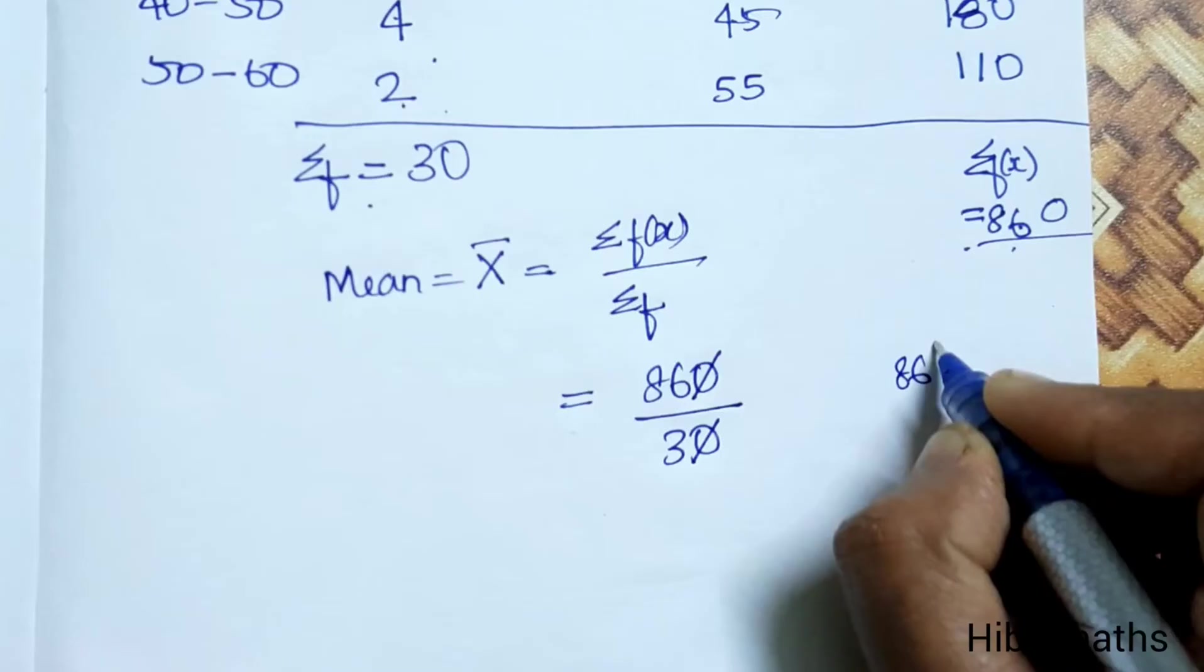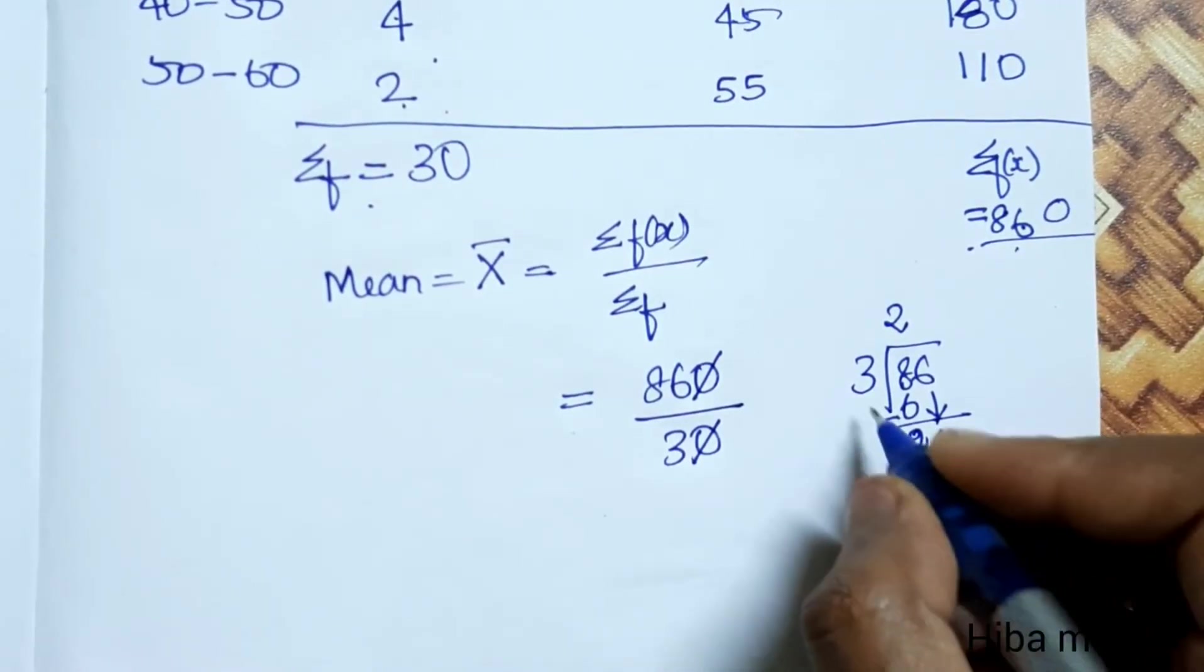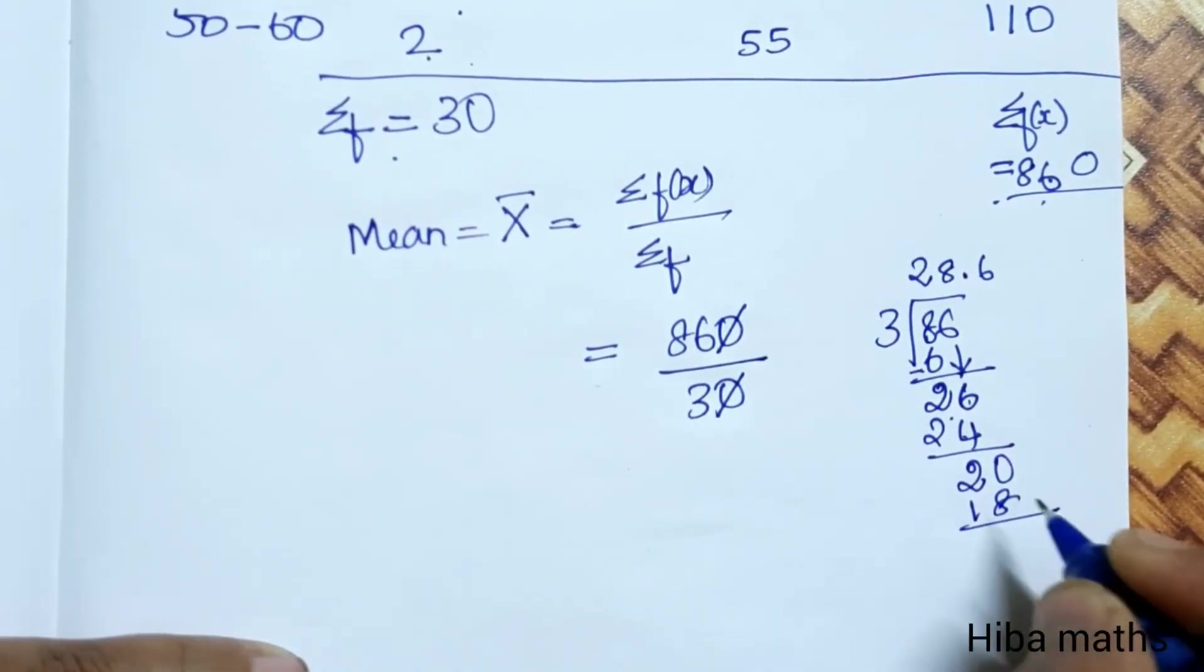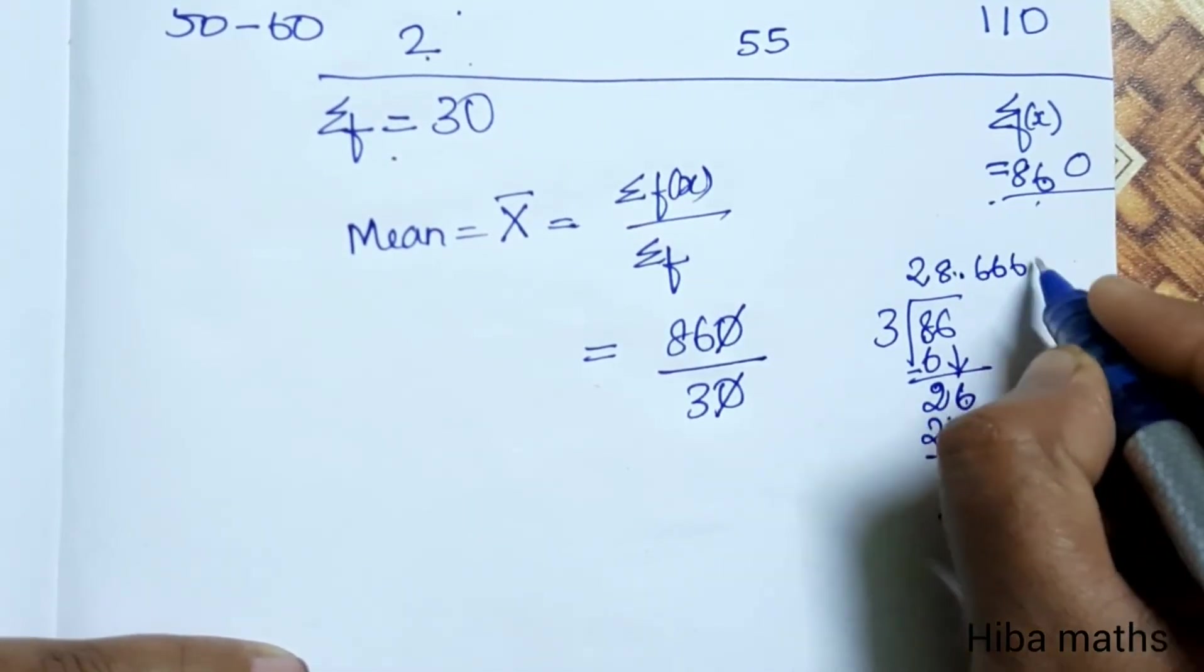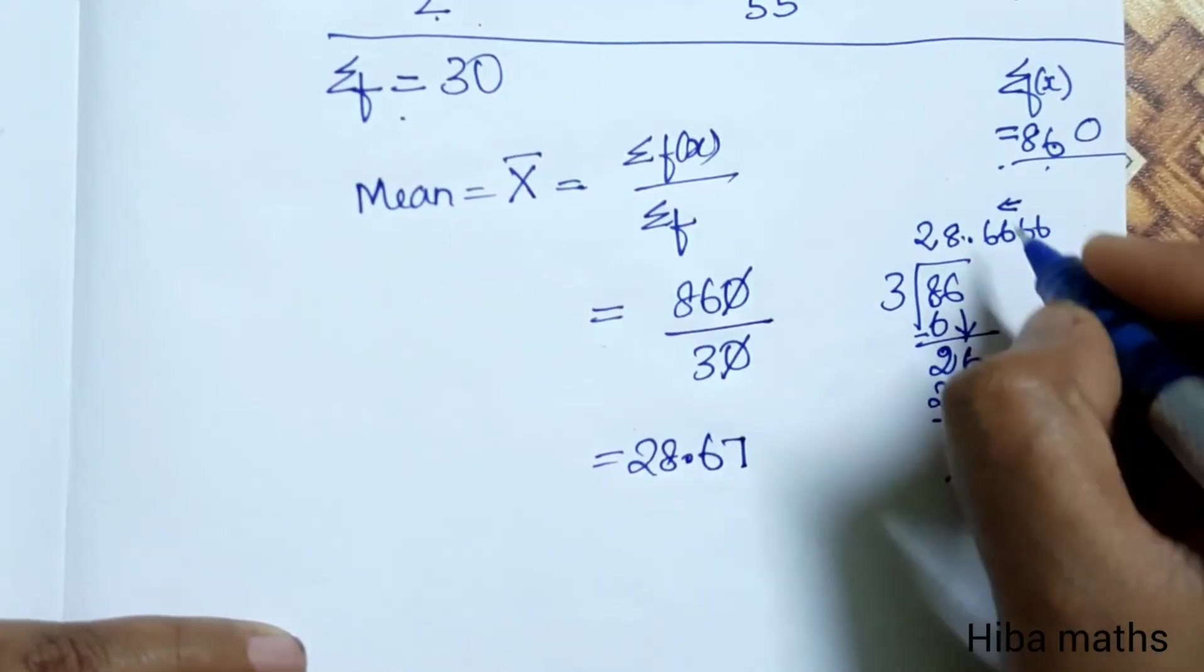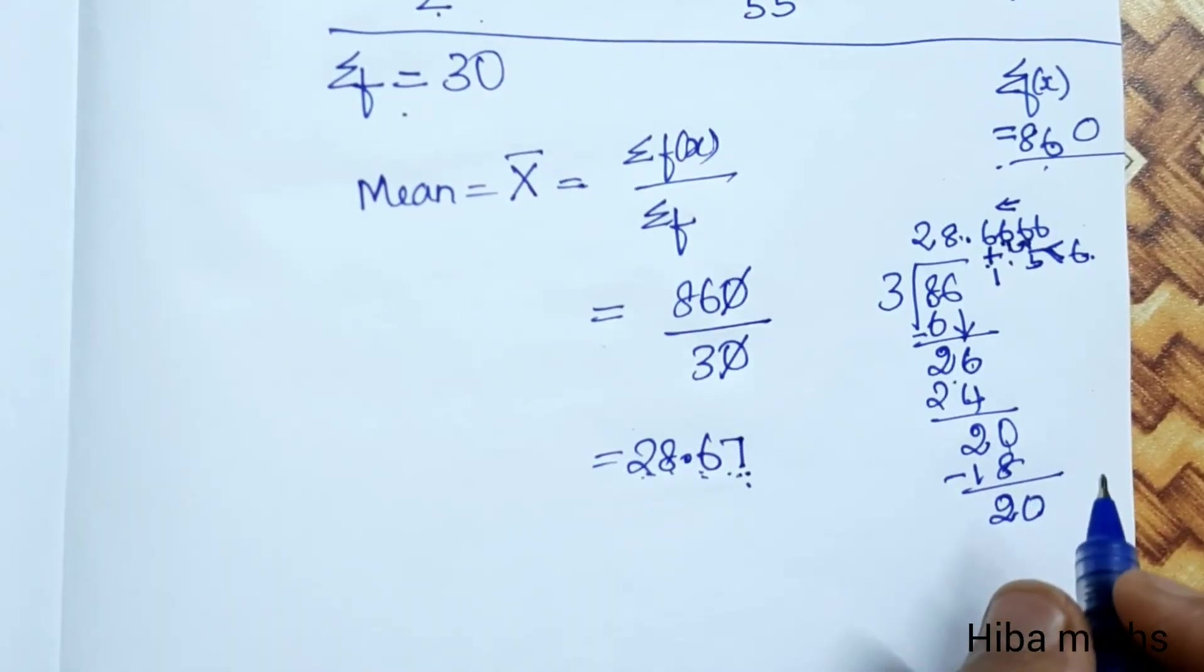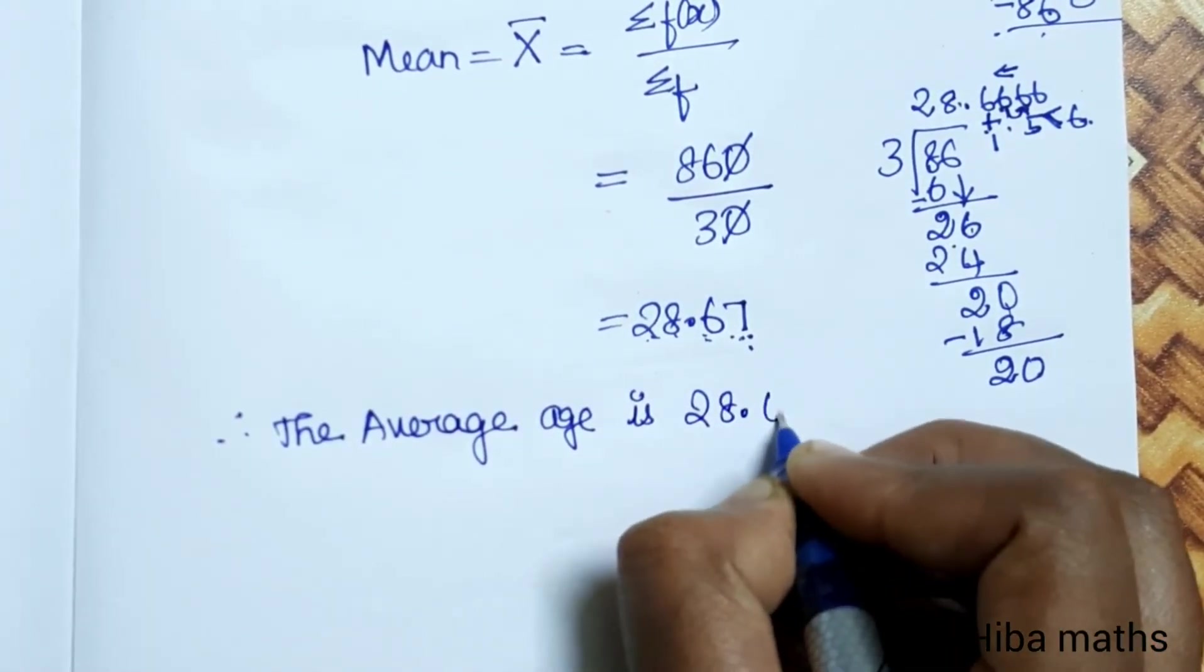860 divided by 30. We can cancel to get 86 divided by 3. 3 twos are 6, 8 minus 6 is 2, bring down 6. 3 eights are 24, 26 minus 24 is 2, bring down 0. 3 sixes are 18, 20 minus 18 is 2. So we get 28.66. Rounding to one decimal, 7 is greater than 5, so we round up: the answer is 28.67. Hence, the average age is 28.67 years.